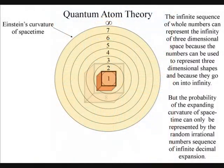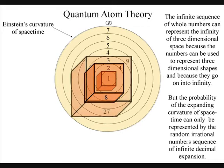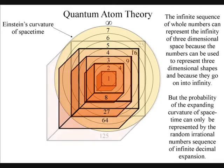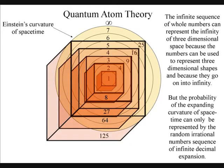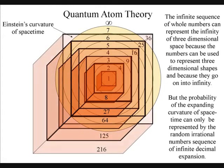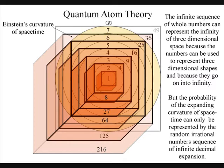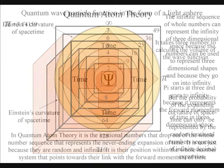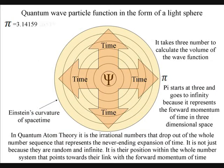It is easy to see how our infinite sequence of whole numbers can represent the infinity of three-dimensional space, because the numbers can be used to represent three-dimensional shapes. But it is the irrational numbers that drop out of the whole number sequence that represent the never-ending expansion of time.